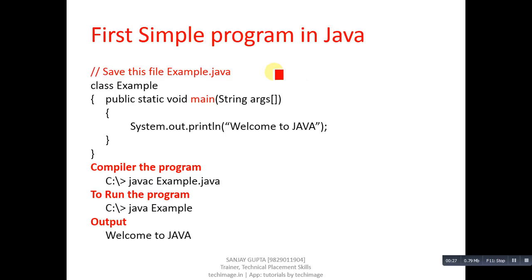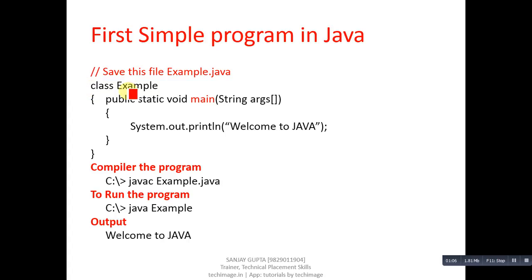Here is a first sample program written in Java. I am explaining this program line by line. The first statement is a comment saying save this file as example.java. The name of the file should match the class name, which is 'example', because when we compile the code the bytecode is created automatically with the name of the class. Class is a keyword and the name of this class is 'example'.